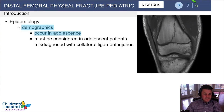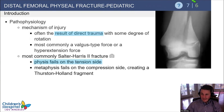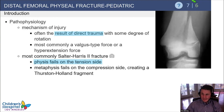Distal femoral physeal fractures tend to occur in adolescence, and you don't want to confuse them with collateral ligament injuries. The pathophysiology usually involves direct trauma with some degree of rotation, usually a valgus-type force or hyperextension.